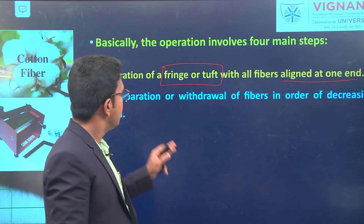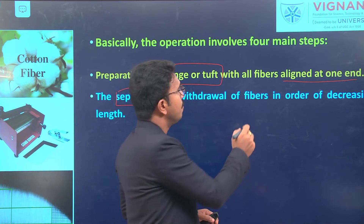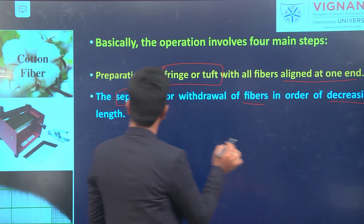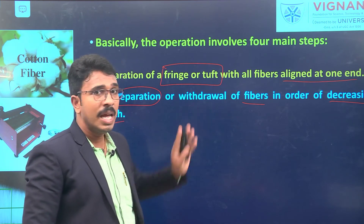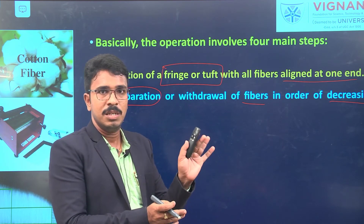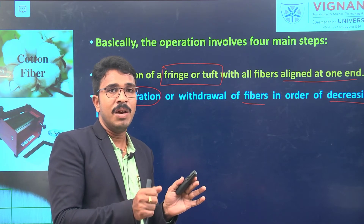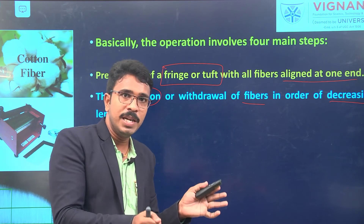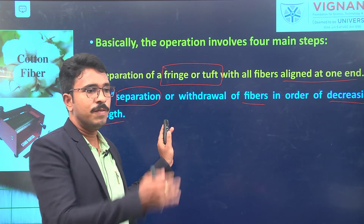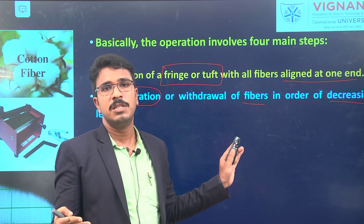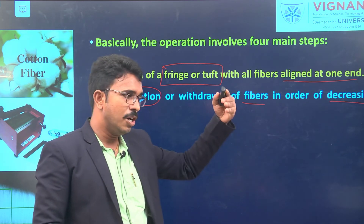The second step is separation or withdrawal of fibers in order of decreasing length. After aligning all fibers at one end, we withdraw and separate the fibers starting from the longest, followed by shorter, still shorter, and finally the shortest fibers.